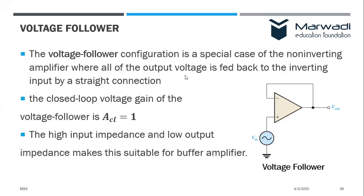We were talking about the voltage follower circuit. In the voltage follower circuit, the input impedance is very, very high. So the current requirement from the input signal will be very, very low, whereas at the output end, we will get sufficient current to drive any other circuit.